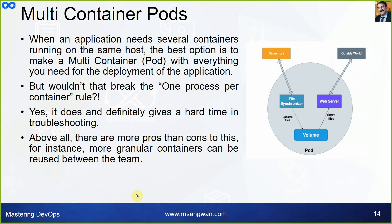Multi-container pods are a very important topic for enterprise-level workloads. When an application needs several containers running on the same host, the best option is to make a multi-container pod with everything needed for the deployment. For example, for the outside world you have a web server serving files from a shared storage volume, and that volume is populated by a file synchronizer container pulling from a repository. One container populates the volume, and the other container runs as a web server — this is a good example of a multi-container pod.